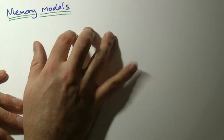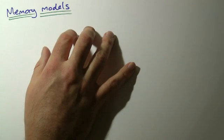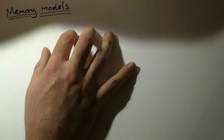This one's a comparison between two models of how we think memory might work, the working memory model which is the newer version and the multi-store model. So we'll work with the multi-store model first.